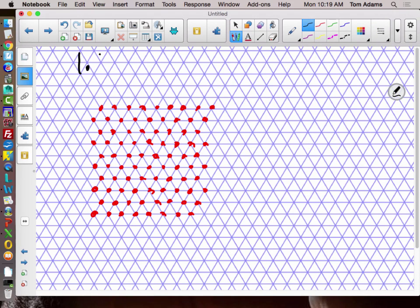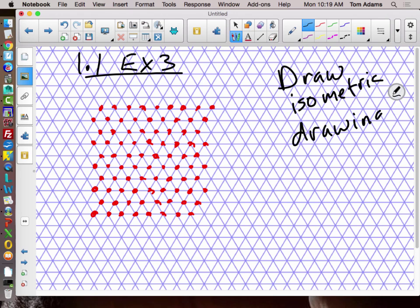So for example number three out of our textbook, they want us to say what is an isometric drawing of the cube structure at the right. So they have a cube drawing.